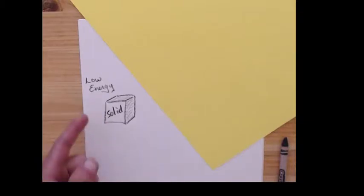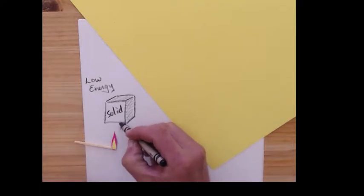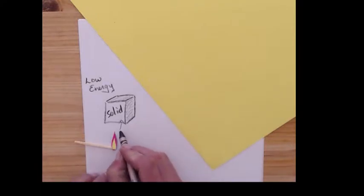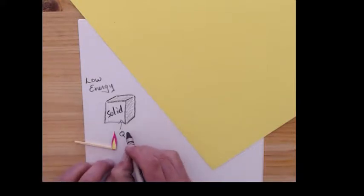Here's my solid again. It has some low energy. I'm going to take my flame and slowly put it underneath there. Heat's now going into there to change its temperature and it starts to heat up by MC delta T.